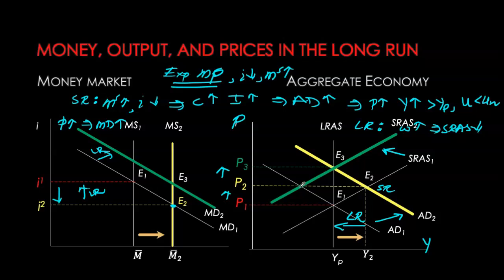They can use contractionary monetary policy to deliberately cause a recession, knowing that in the long run output will adjust back to potential and prices will be pushed down, bringing inflation to its target level. Money neutrality tells us money does not affect the real economy — real GDP or the natural rate of unemployment — and only affects inflation. The flip side is that it is an extremely useful tool for targeting inflation in the long run. The Bank of Canada can choose any target inflation level, whether higher or lower than the current rate.